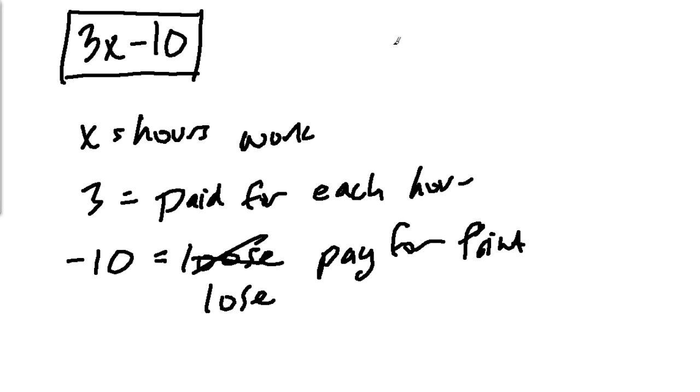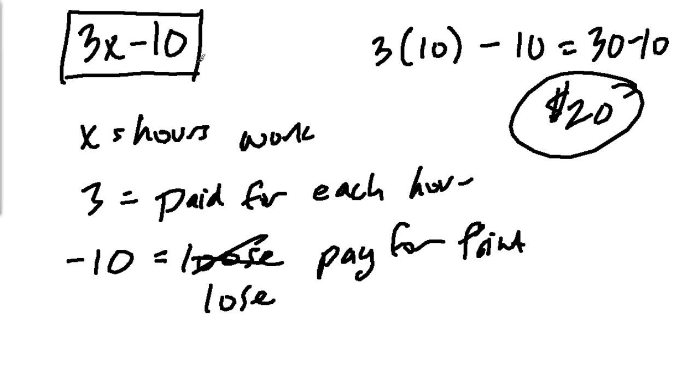So, for example, let's say you work 10 hours. Well, you get 3 times 10 minus the $10 you already paid for paint. So you would really make 30 minus 10, or $20. So these problems do have context.